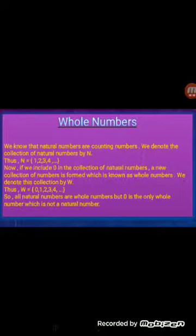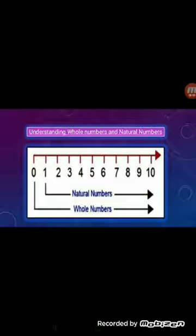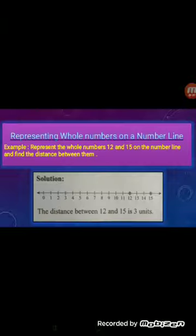Natural numbers start from 1 and go till infinity. Now if we include 0 in the collection of natural numbers, a new collection of numbers is formed which is known as whole numbers. Whole numbers start from 0 and go till infinity. So we can say all natural numbers are whole numbers, but 0 is the only whole number which is not a natural number. Natural numbers start from 1 whereas whole numbers start from 0, and both go till infinity.